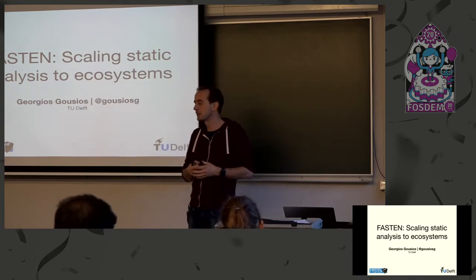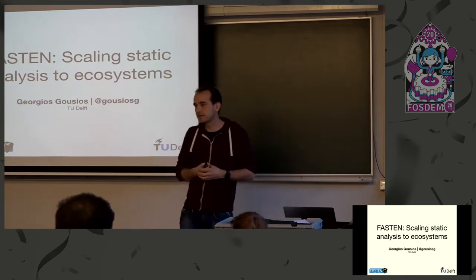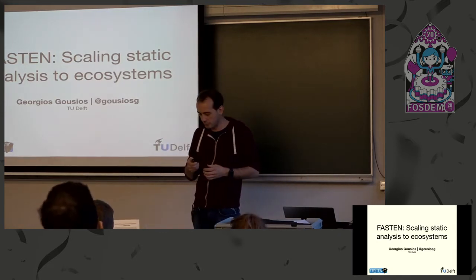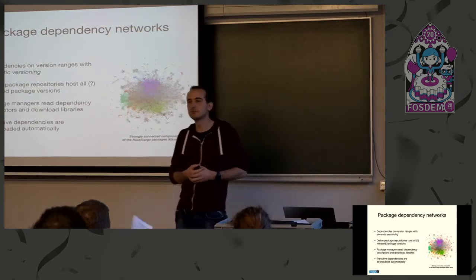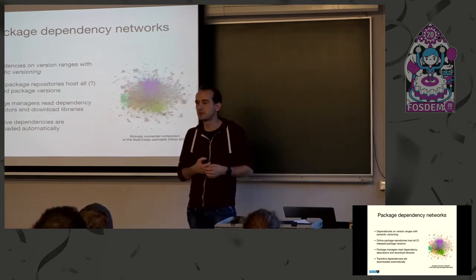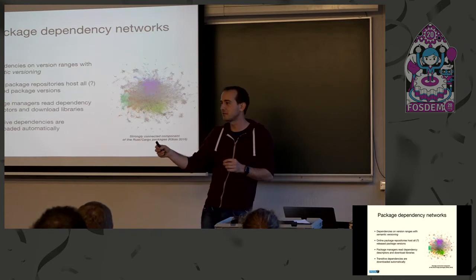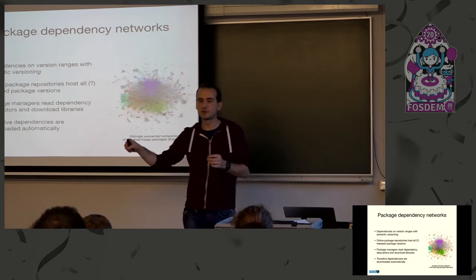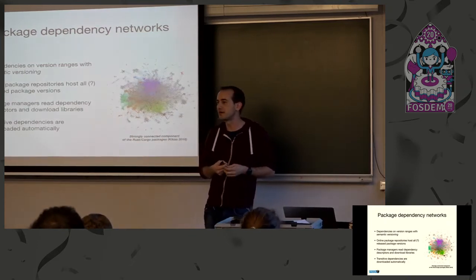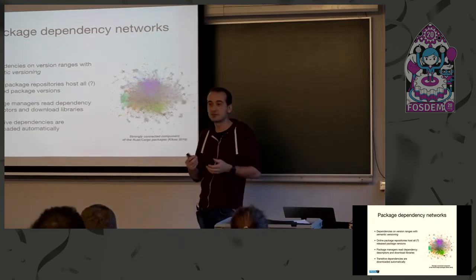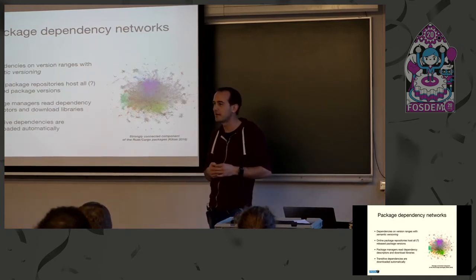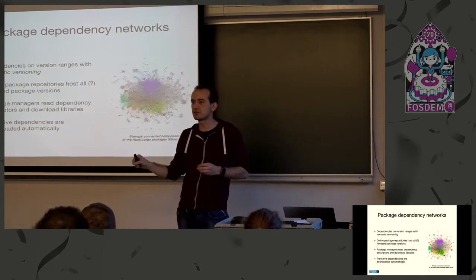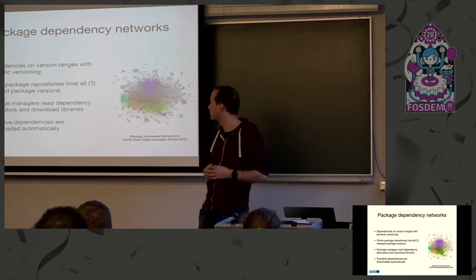What I'm going to be talking about is a project we are currently running that tries to scale static analysis at the ecosystem level for programming languages. We're in a room about dependency management, so I don't need to explain much. In any programming language we can have a dependency to a package, which can have its own dependencies — dependency to dependency to dependency. As a computer scientist you immediately understand this forms a graph. The graph is versioned — every new version of a package creates a new version of the graph. These graphs are pretty big: for Maven, the repository currently has around 3.5 million artifacts, where an artifact is a package plus a version.